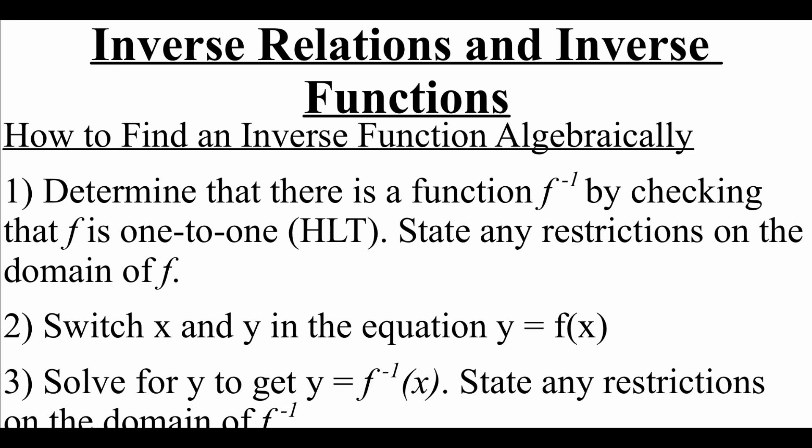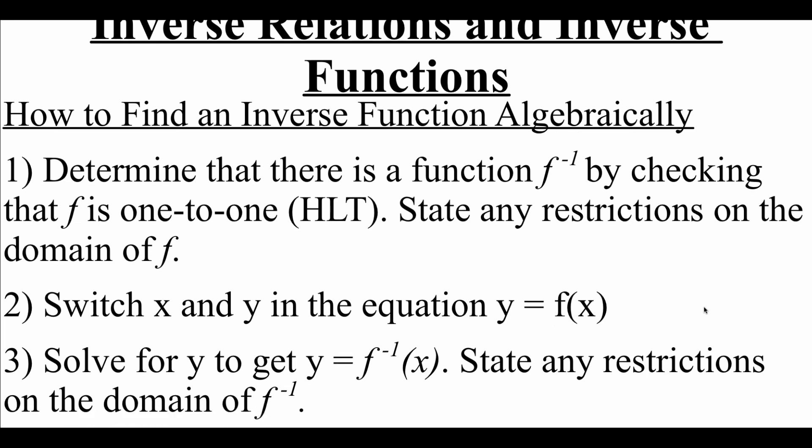So we're going to look at how we find inverse functions algebraically. The first thing we want to do is look at our original function f and determine if there's going to be an inverse function by checking that f is one-to-one, meaning we're going to run the horizontal line test. If the graph passes the horizontal line test, we'll continue working; if it doesn't, we stop because the inverse doesn't exist. We also want to state any restrictions on the domain of our function. Step two: switch around the x and the y in the equation. Step three: solve to get y alone, and that answer will be the inverse of our original function f. Again, state any restrictions on the domain of the inverse function.